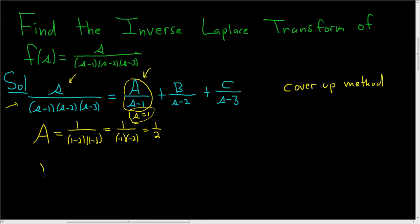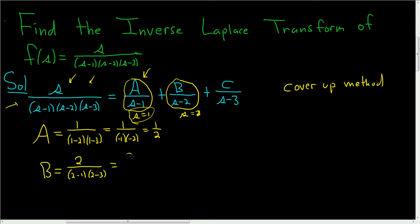Let's find B. Here's B, and again you ask yourself, what makes the bottom 0? Well, S equals 2 causes a problem — it makes the bottom 0. So you go back over here, cover up the S minus 2, and plug in 2 everywhere else. So 2 over 2 minus 1, and then 2 minus 3. 2 minus 1 is 1, and 2 minus 3 is negative 1. So we get negative 2.